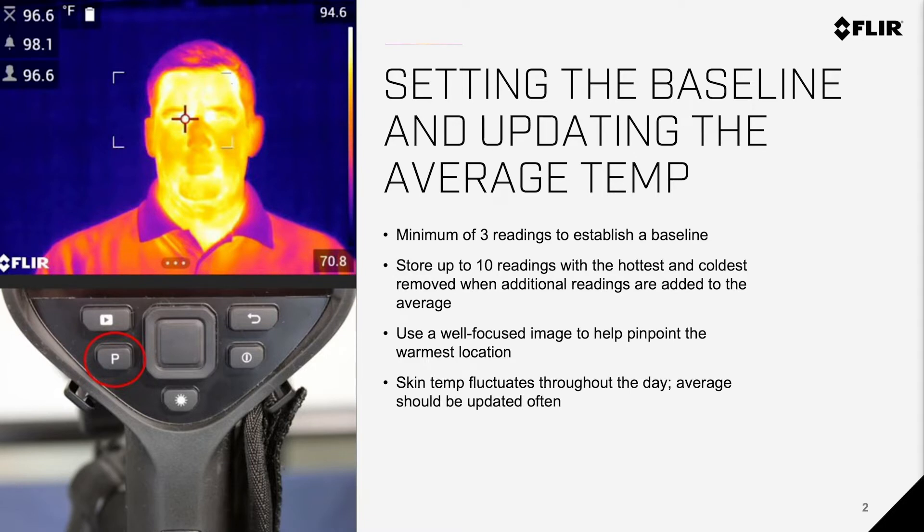So we need to add additional healthy body temperature readings to the average every hour. The average can also be re-established by a long press of the P button. This will clear out the stored readings to allow for a fresh start.